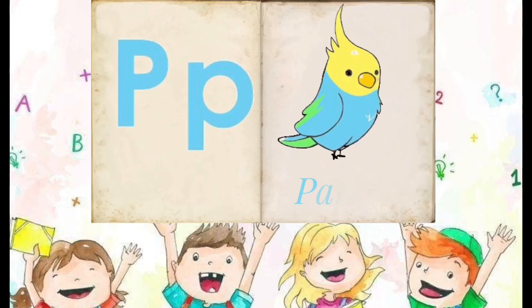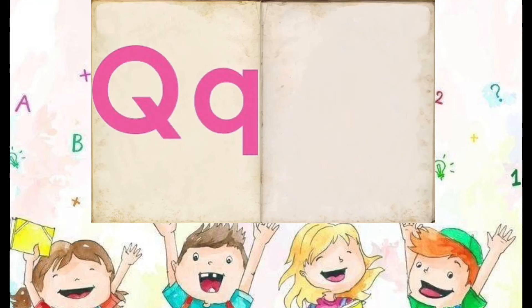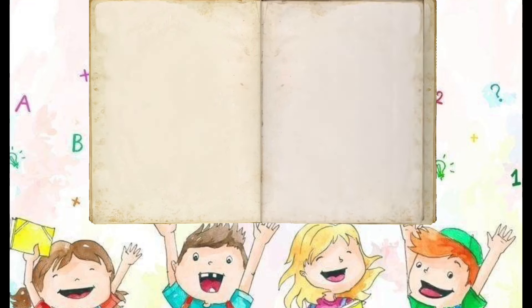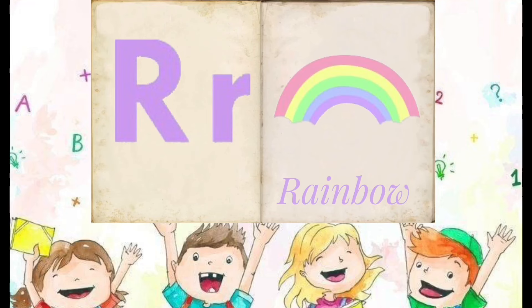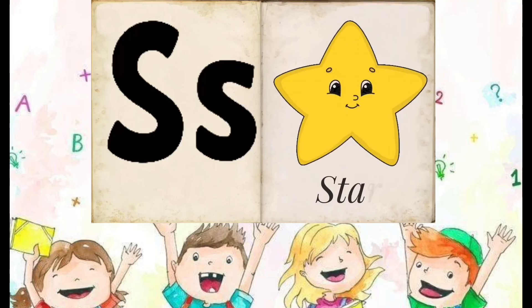P is for Parrot, Q is for Queen, R is for Rainbow, X is for Star.